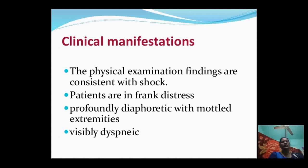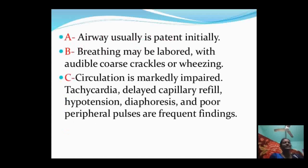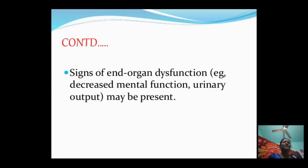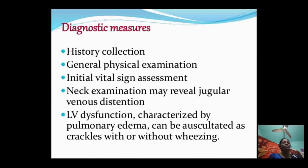Clinical manifestations of cardiogenic shock: on physical examination, patients appear in frank distress, profoundly diaphoretic with mottled extremities. Airway is usually patent initially; breathing may be labored with audible coarse crackles or wheezing. Circulation findings include tachycardia, delayed capillary refill, hypotension, diaphoresis, and poor peripheral pulses. Signs of end-organ dysfunction may also be present.